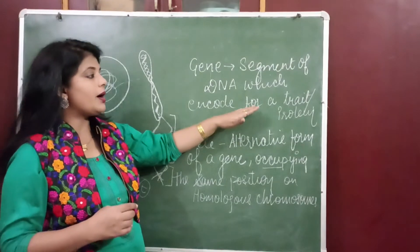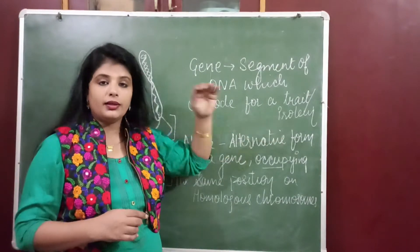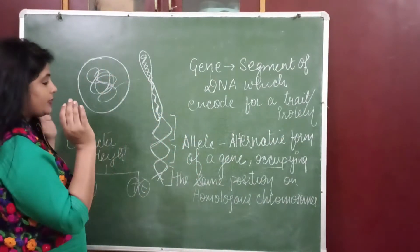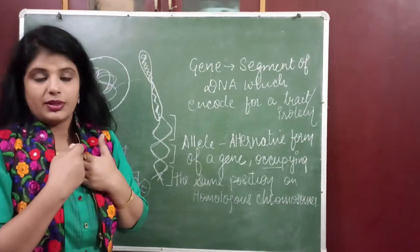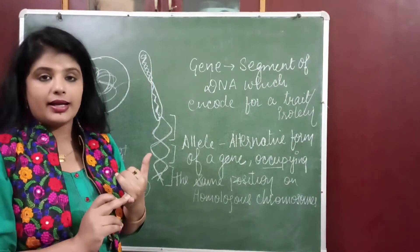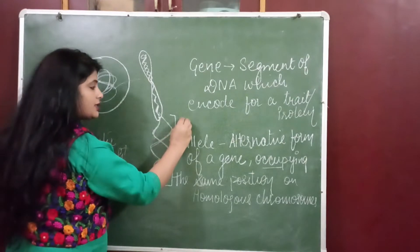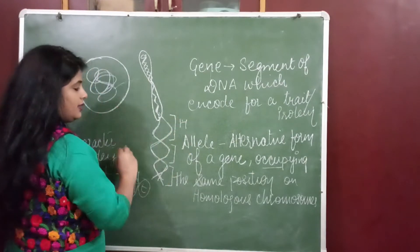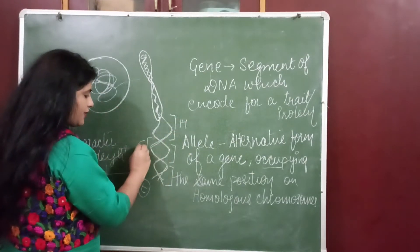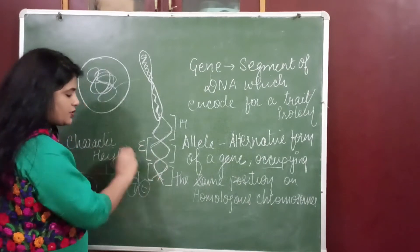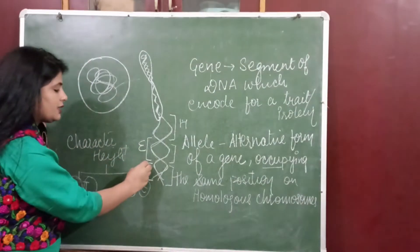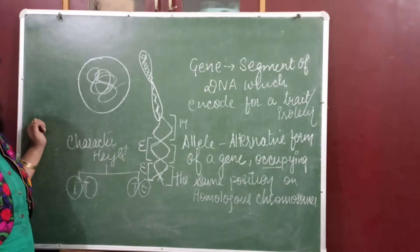For example, as an individual I have a height, I have an eye color, I have an ear shape. So this portion is responsible for height, this portion is responsible for eye color, this portion is responsible for ear shape.